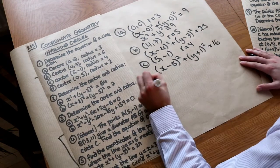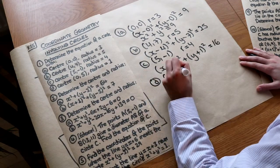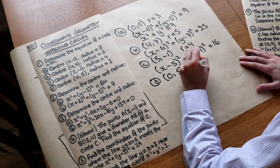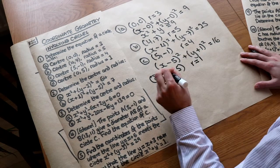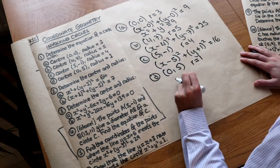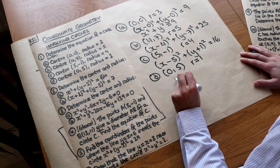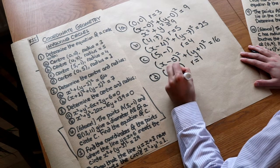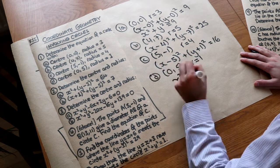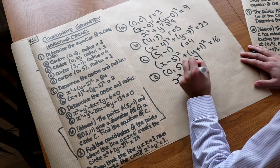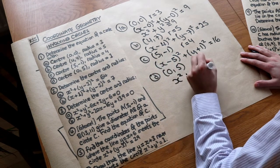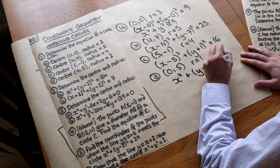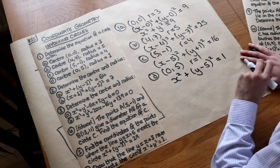Finally for part D, with centre (0, 5) and radius 1: we effectively have X minus 0 squared, which is just X-squared with no bracket needed, plus (Y minus 5) squared equals 1-squared, which is just 1.